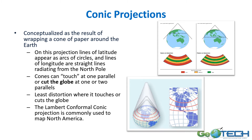Conic projections use a cone, and there are two ways to look at it: does the cone touch the surface in one spot, or does it cut the surface in more than one spot? On this projection, lines of latitude appear as arcs of circles, and lines of longitude are straight lines radiating to the pole. Cones can touch at one parallel — you can see the green area where there's little distortion, and how it becomes more distorted as you move away from that parallel. You can also have it cut the surface at two points, where the two parallels touching are not distorted, and distortion increases as you move away from them.